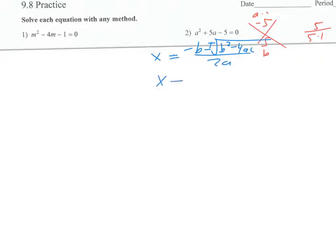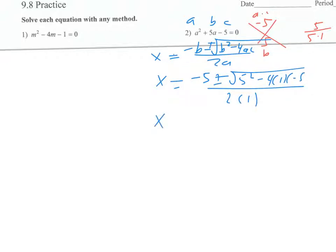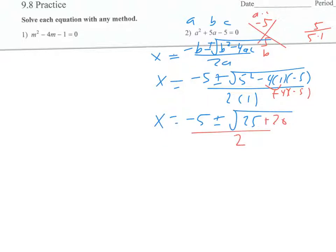We have A, B, and C — the numbers in front. B is five, so I'm going to put negative five plus or minus the square root of five squared minus four times one times negative five, all over two times one. Simplifying: five squared is 25, and negative four times one times negative five is plus 20, all over two, giving us 45 under the radical.